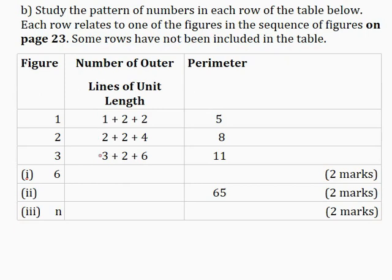Notice that the first term in the number pattern corresponds to the figure numbers. So when the figure number is 1, the first term is 1; when the figure number is 2, the first term is 2; when the figure number is 3, the first term is 3. So when the figure number is 6, the first term will be 6, and when the figure number is n, the first term will be n. The second term is plus 2 irrespective of the figure number, so this will be plus 2 and this will be plus 2.